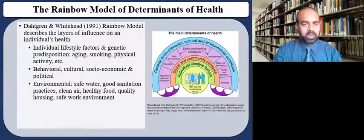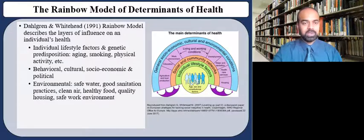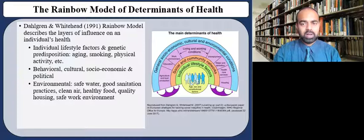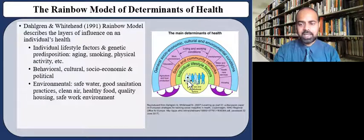So, I hope that you have been able to understand the deep connection of the environment and human health. The rainbow model of determinants of health incorporates some of these aspects. In this model, you can see at its core the individual biological determinants such as age, sex, and constitutional characteristics. These characteristics affect health and are largely fixed.